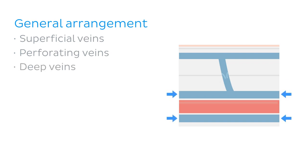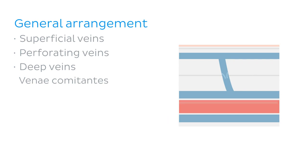The deep veins of the body tend to run in parallel with their accompanying artery, sometimes in pairs and sometimes more, and these are known as the venae comitantes of that particular artery. Veins are often arranged in this way as the pulsation of the accompanying artery helps with the venous return. Vena comitans — singular for venae comitantes — comes from Latin and quite simply means accompanying vein.